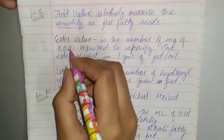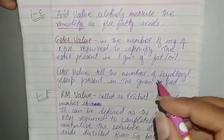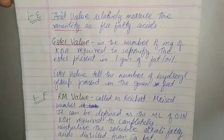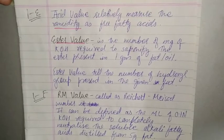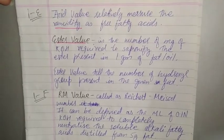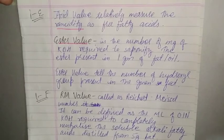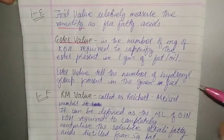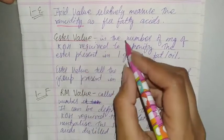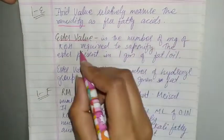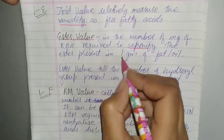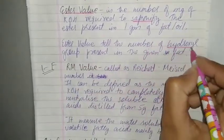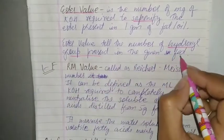Next definition we have is ester value. This is the definition of analytical constant from unit 3. It is the number of mg of KOH required to saponify the ester present in one gram of fat and oil. Ester value indicates the number of hydroxyl groups present in the given fat or oil.